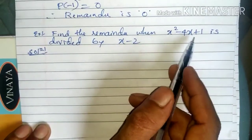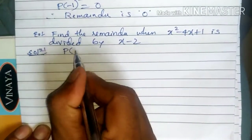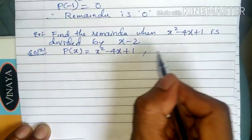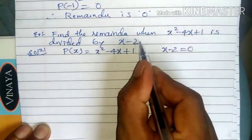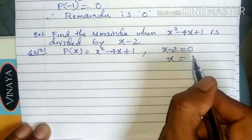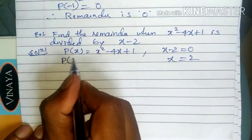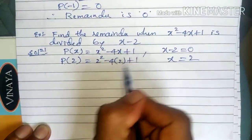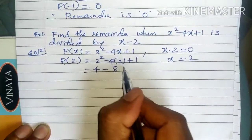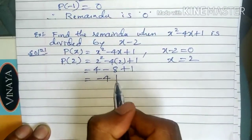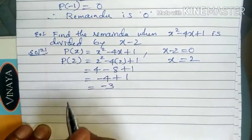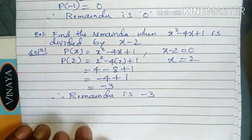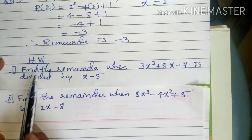Next example: find the remainder when x² - 4x + 1 is divided by x - 2. Let p(x) = x² - 4x + 1. Set x - 2 = 0, so x = 2. Calculate p(2): 2² - 4(2) + 1 = 4 - 8 + 1 = -3. Therefore the remainder is -3.